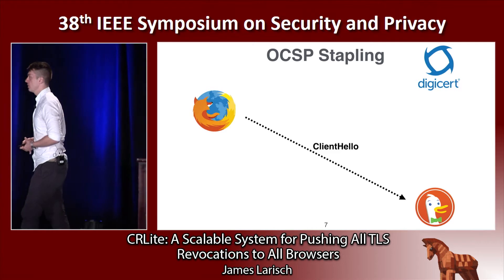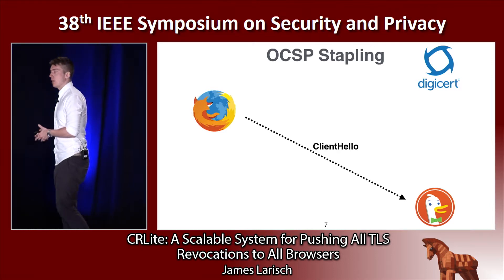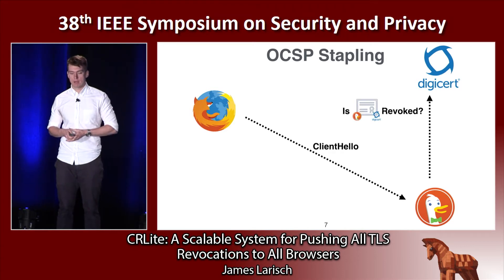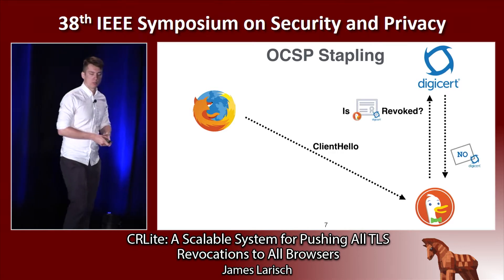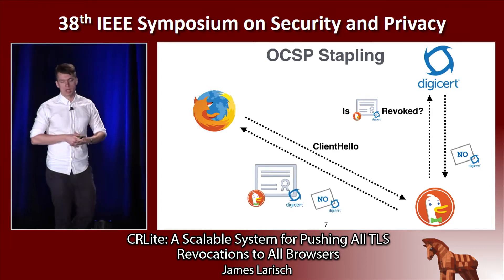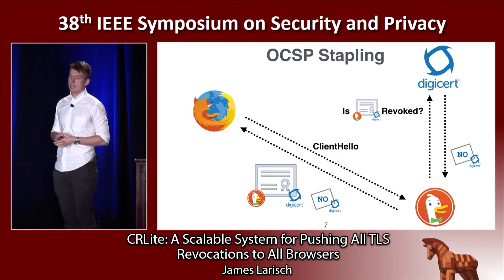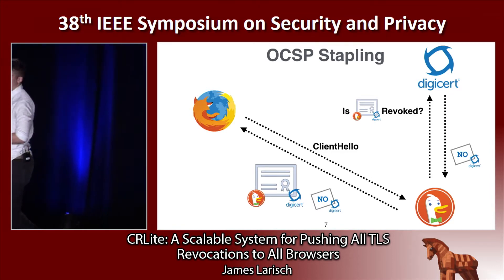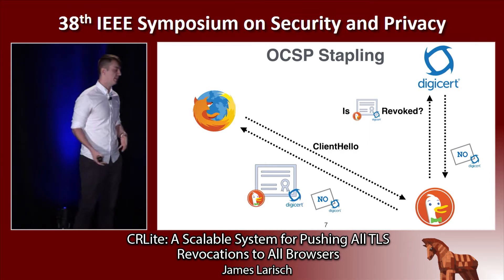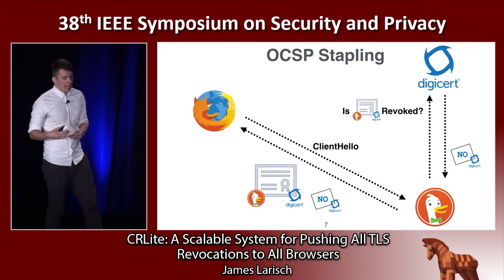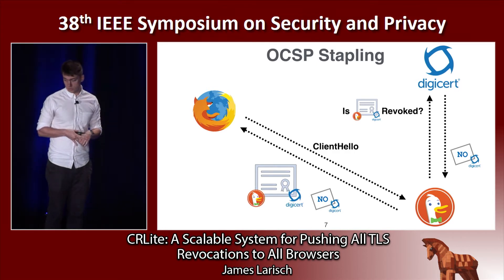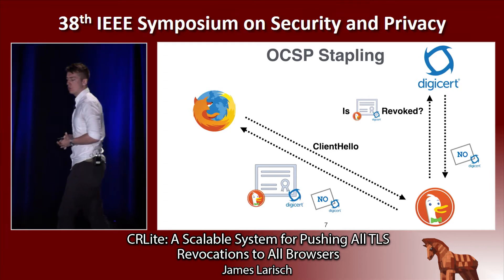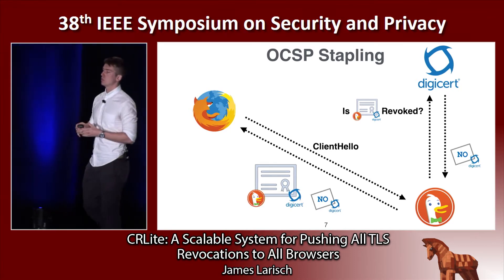A better solution was proposed: OCSP stapling. Rather than the browser making the OCSP request, the website can. Prior to serving the certificate, the website asks the certificate authority if its certificate is revoked. The certificate authority responds and staples this response to the certificate. There are two problems with this. First, an attacker with access to the network can strip the OCSP response from the certificate. Second, as of 2016, only about 7% of all certificates were served by an OCSP stapling supporting server.